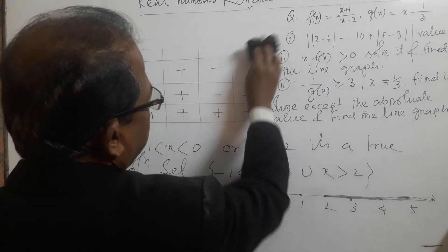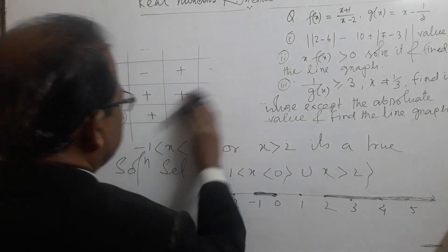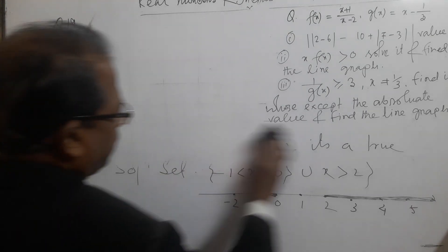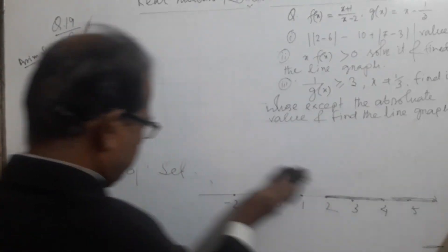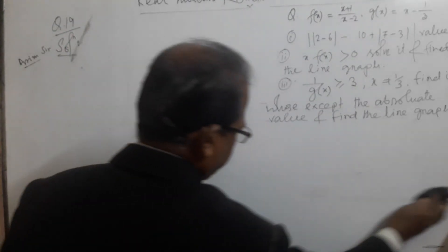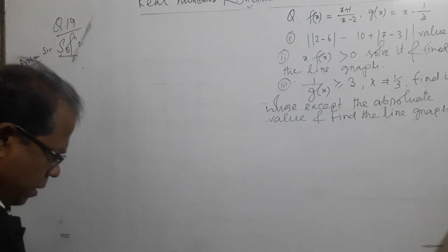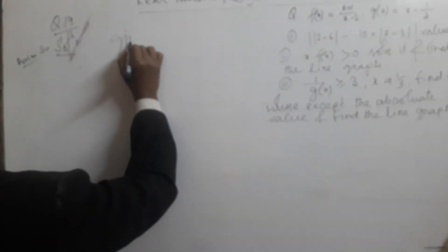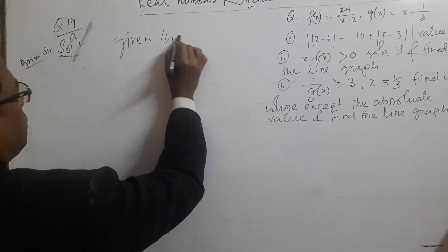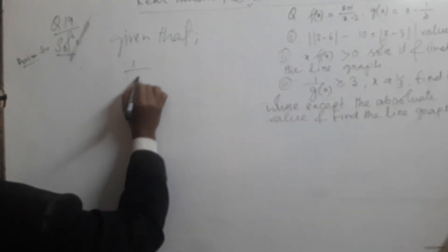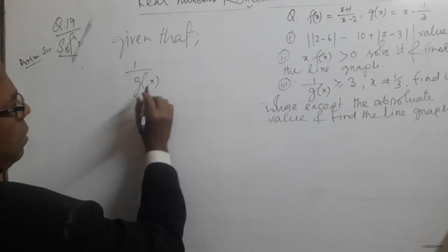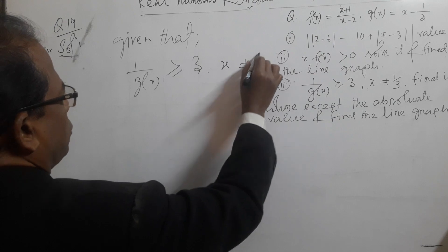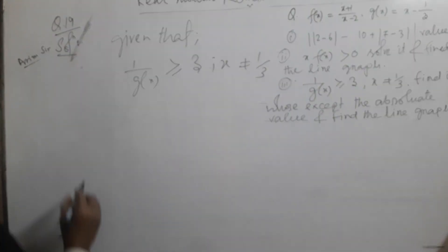Now we solve number 3. Given that j(x) equals 1/(x minus 1/3) is greater than or equal to 3, and x is not equal to 1/3.